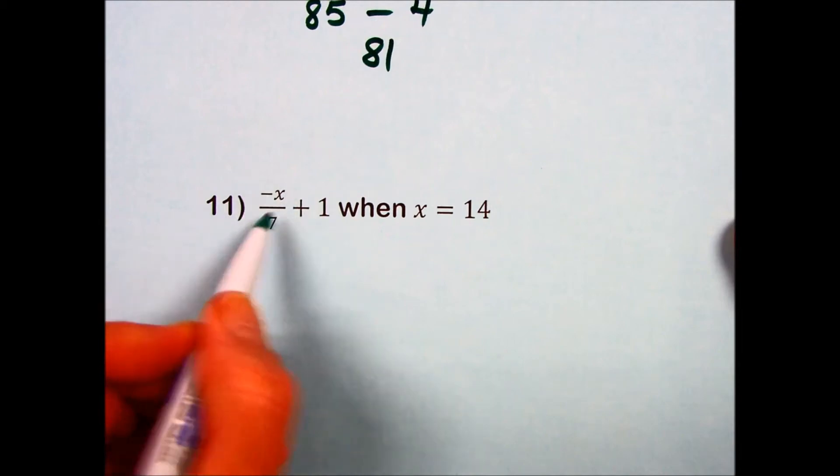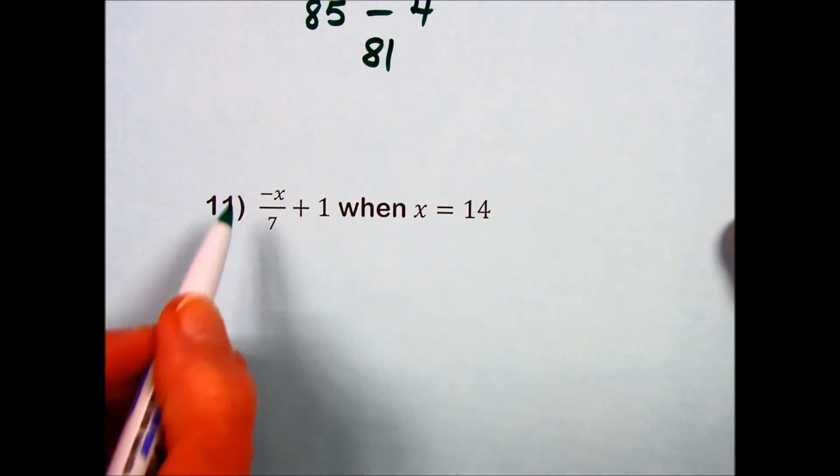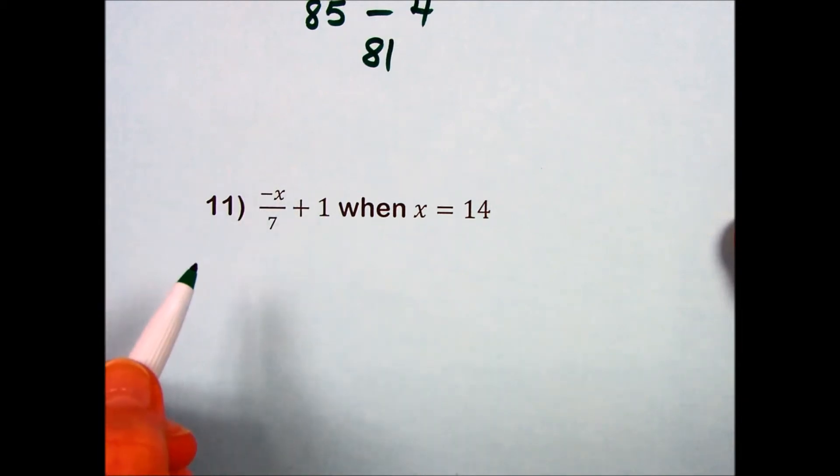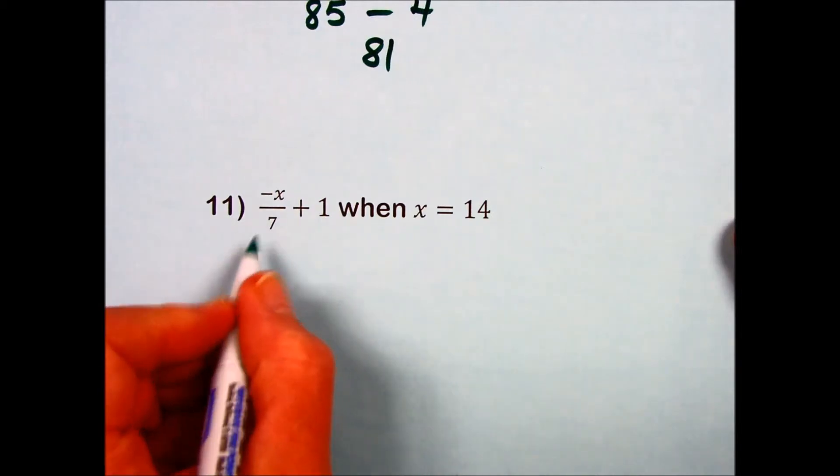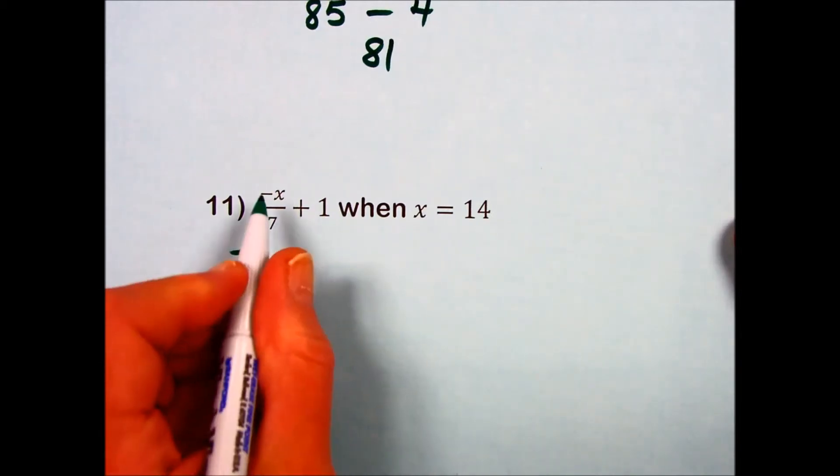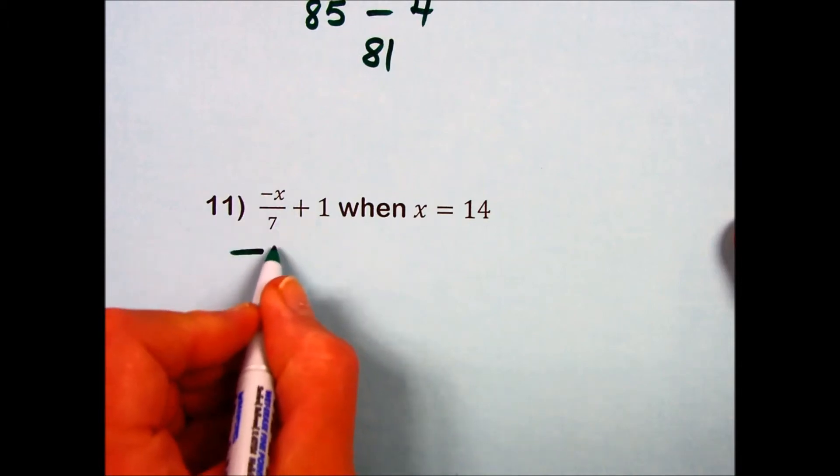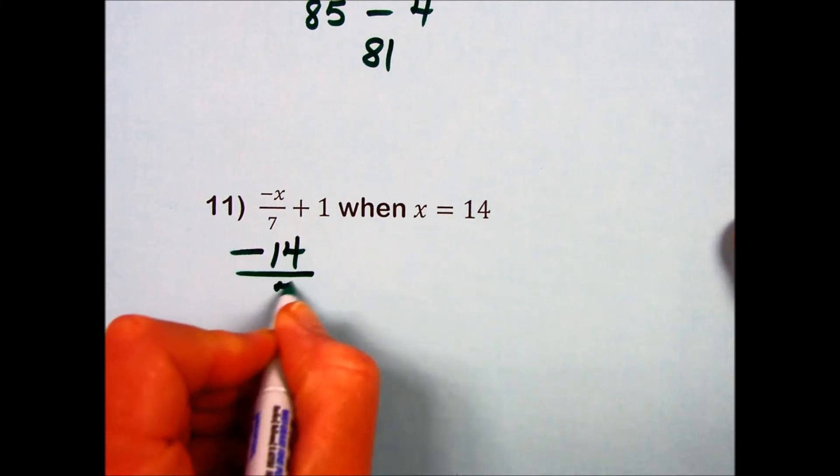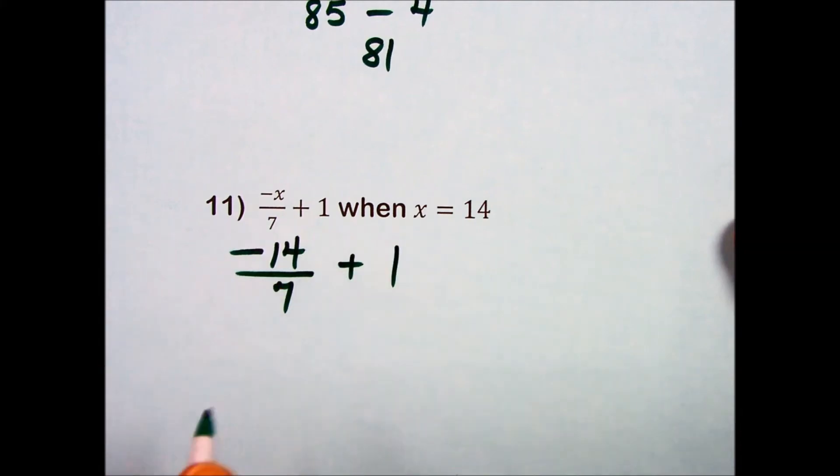I see an implied division and an addition. The division is stronger or has the higher priority over addition, so plan determined. The minus is part of the expression, replacing x with 14, over the 7, plus 1.